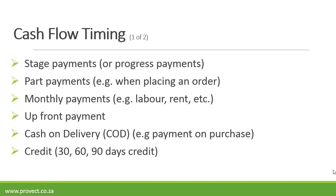It can be stage payments or progress payments, part payments, monthly payments, upfront payments, cash on delivery, and you also get credit — 30, 60, or 90 day credit.